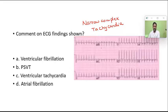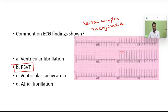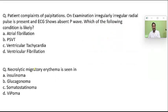All these complexes are well defined, and there is no absent P wave as in atrial fibrillation. In atrial fibrillation there is an absent P wave and irregular RR intervals. Here the RR intervals are regular, so most probably this has to be paroxysmal supraventricular tachycardia.